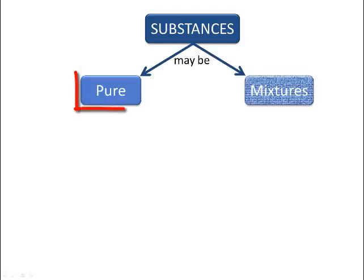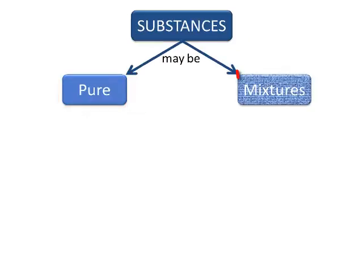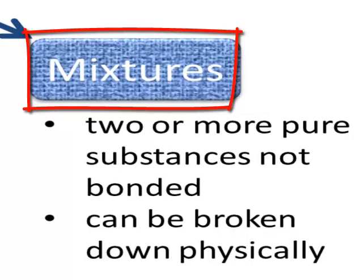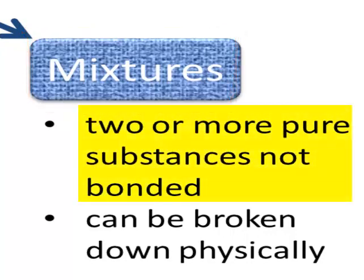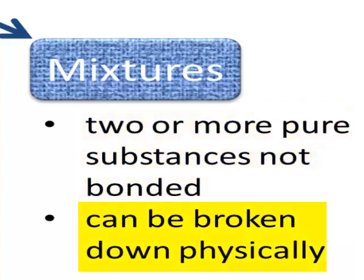We can divide substances into pure substances and mixtures. Mixtures consist of two or more pure substances that are together but not bonded together, and so we can break them down physically.